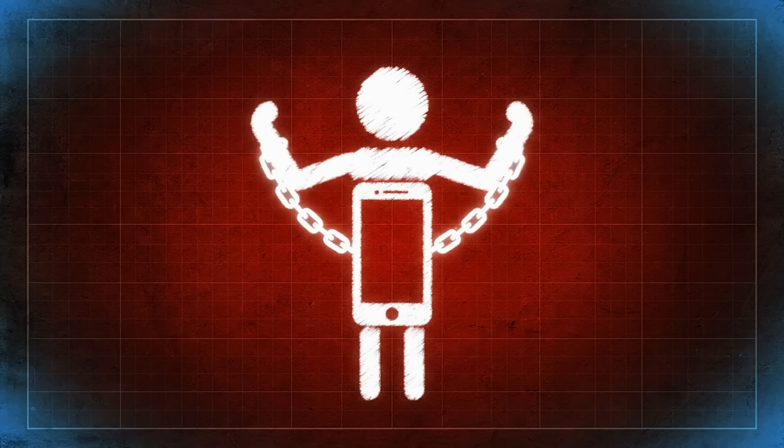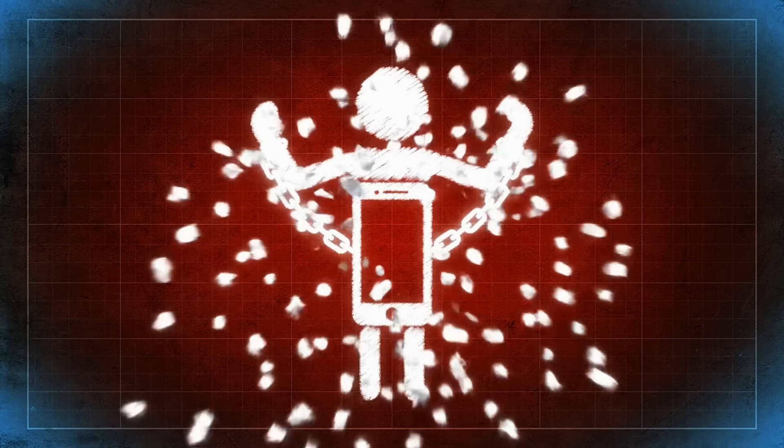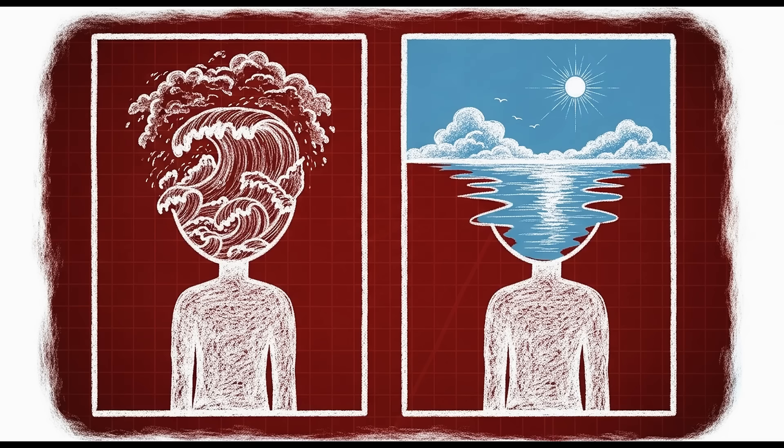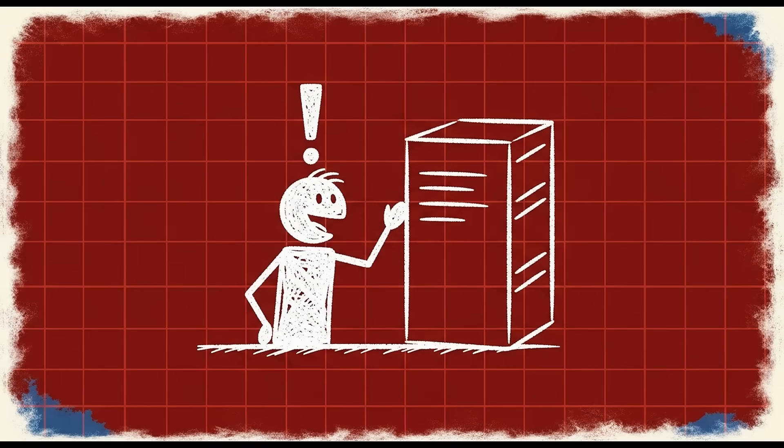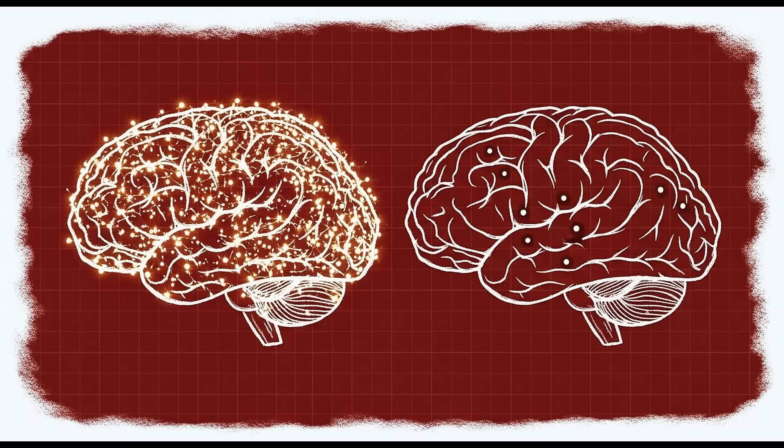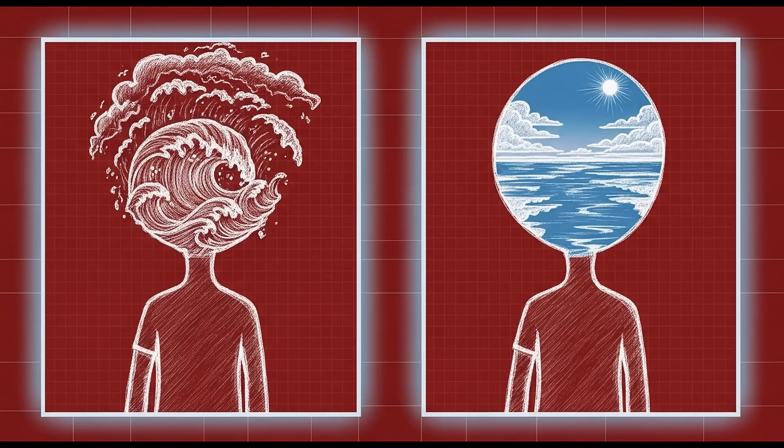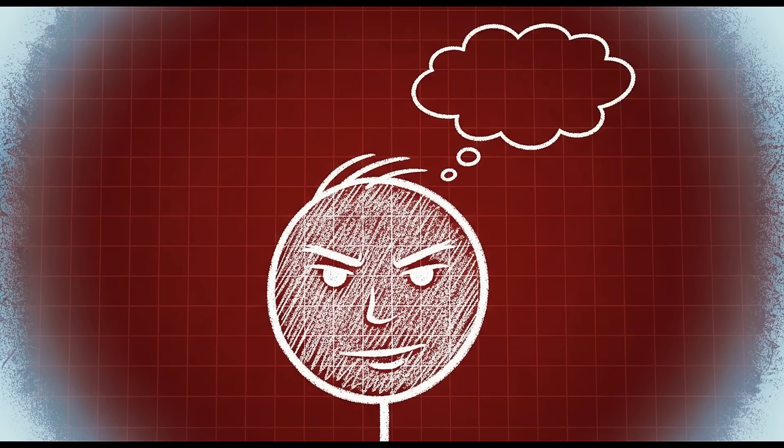The rewiring process never truly ends, because you're always either reinforcing discipline or reinforcing distraction. Every moment is a choice. But after you've reset your dopamine system, the choices become easier. The pull toward distraction weakens. The pull toward meaningful work strengthens. You develop what psychologists call intrinsic motivation. You do things because they're satisfying in themselves, not because you're chasing an external reward.